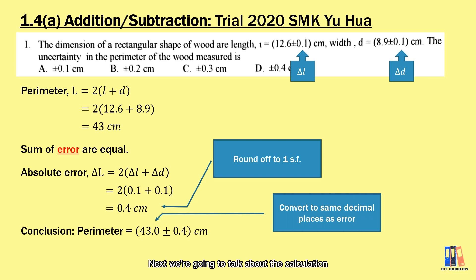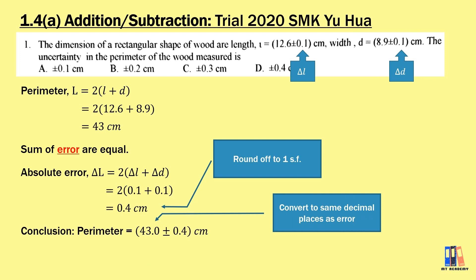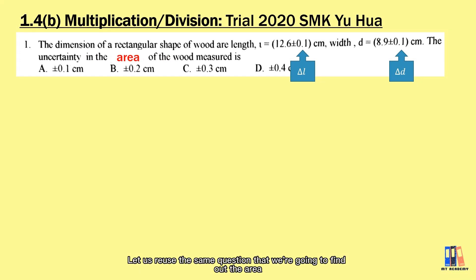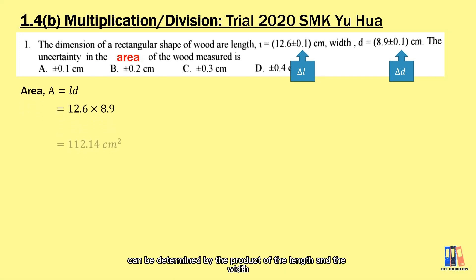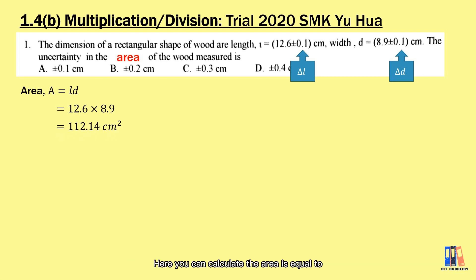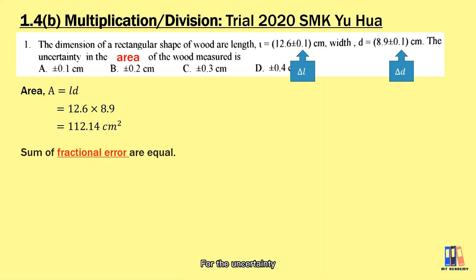Next we're going to talk about calculations which involve multiplications or divisions. Using the same question, we find the area of the wood. The area of the rectangular wood is determined by the product of the length and the width, and you can calculate the area to be equal to 112.14 cm².